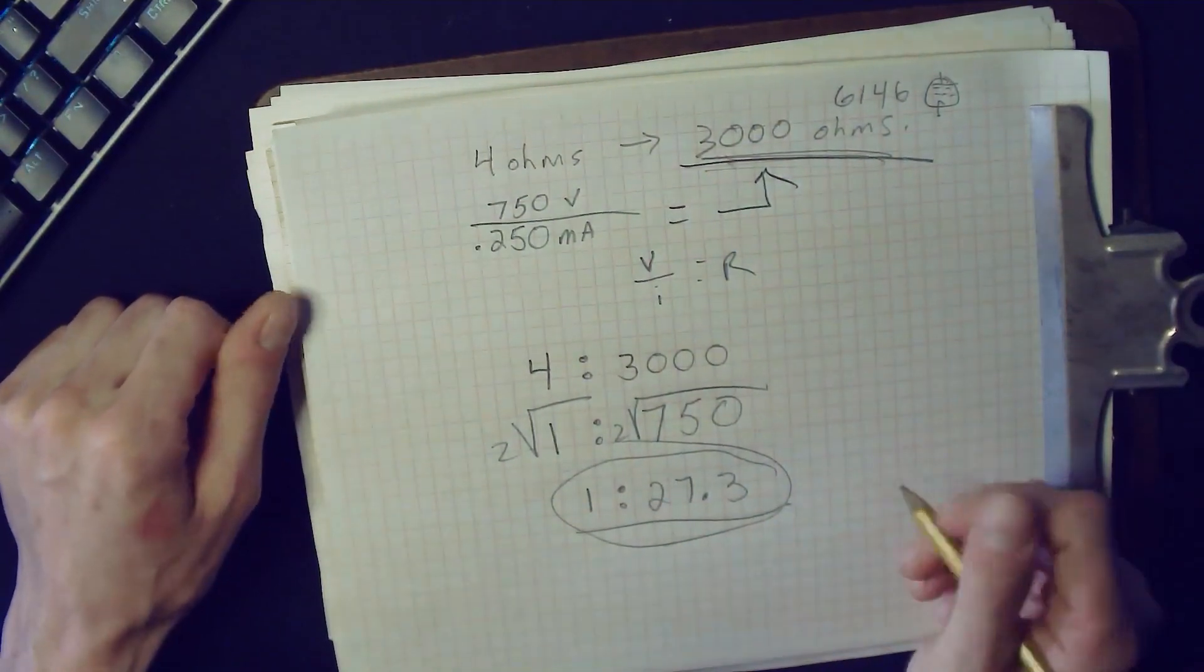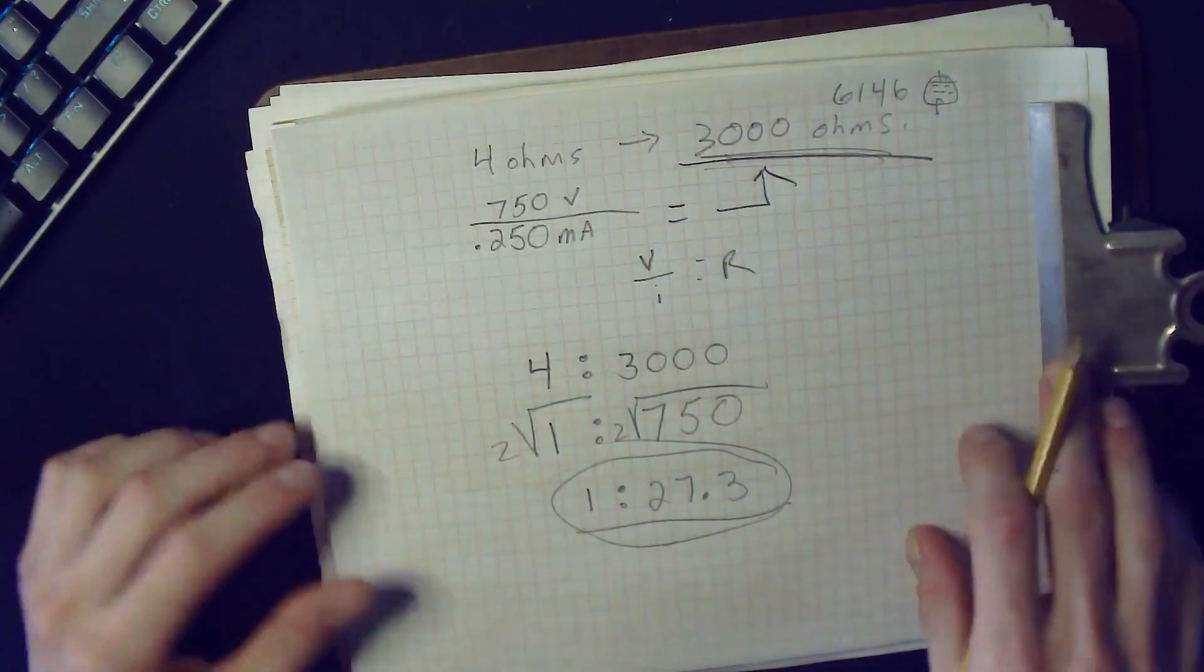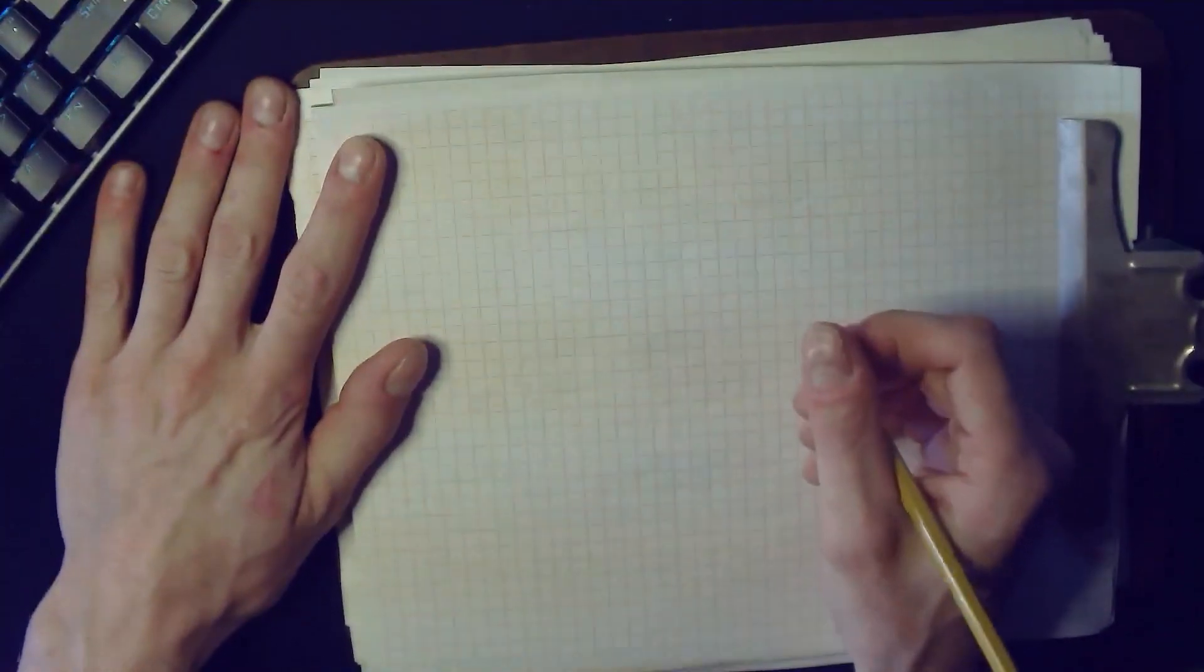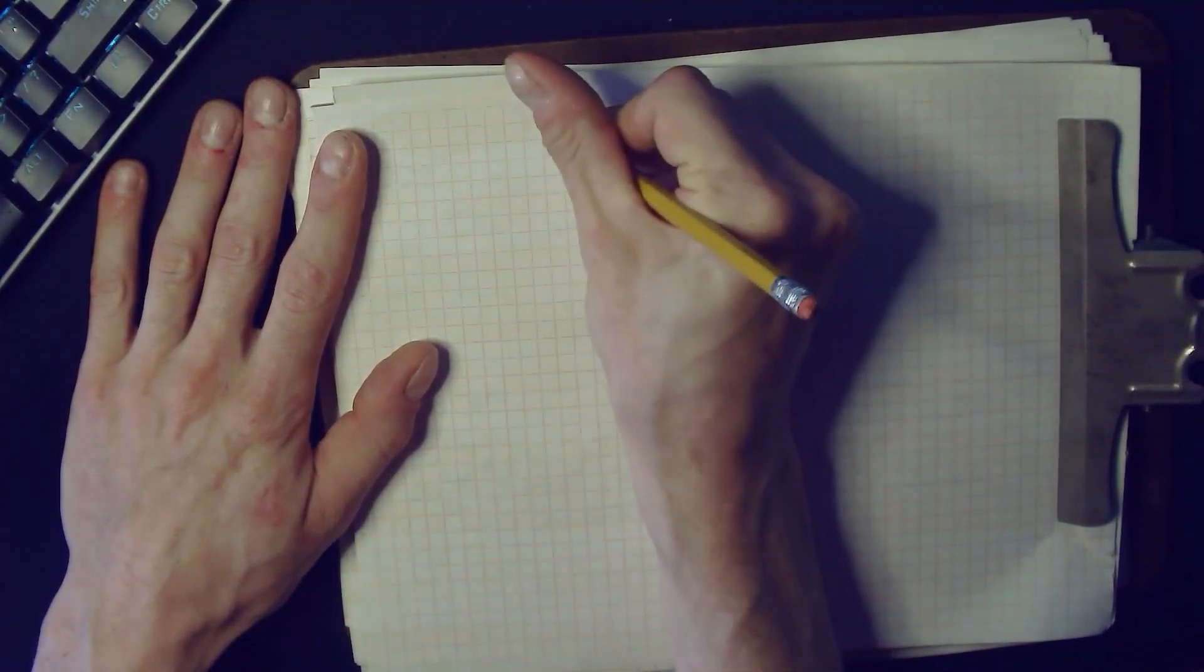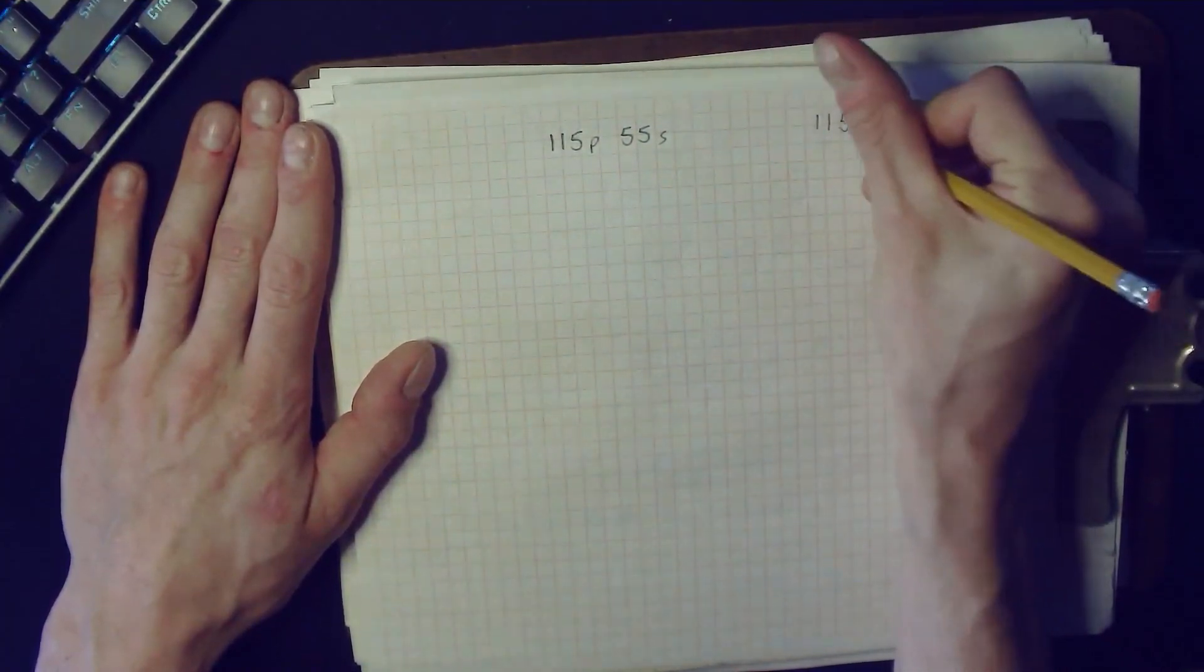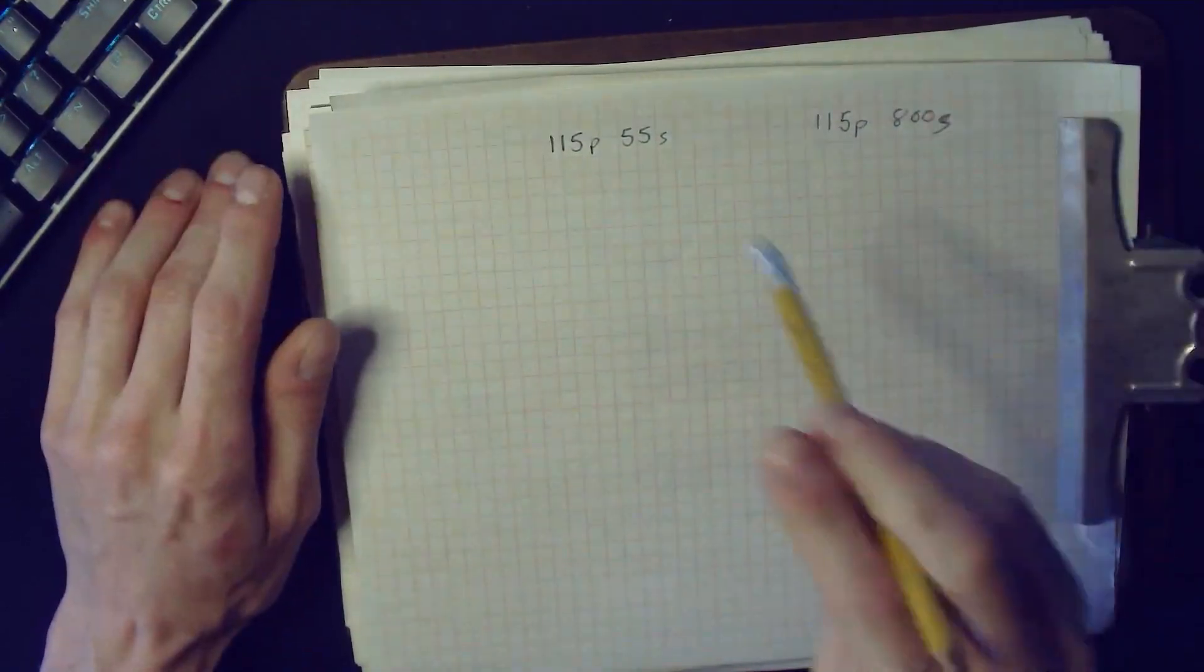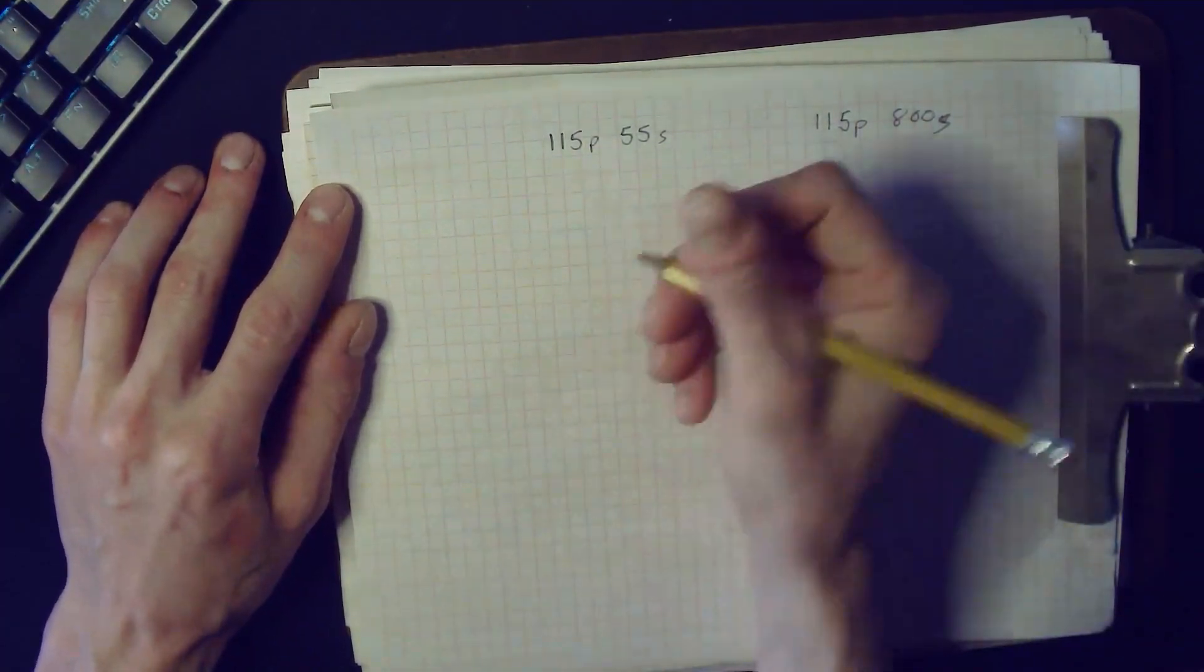Now I went on the Antec website and they don't make a transformer that has this exact ratio. However, the transformers are so well built, have such low leakage reactance, that you can literally use them in series. I will draw exactly how I accomplish that. We have two transformers from Antec. The first one is a 115 volt primary and a 55 volt secondary. The second also has a 115 volt primary but it has an 800 volt secondary.